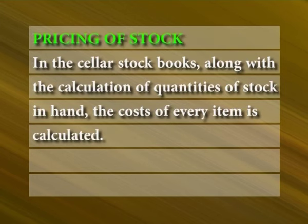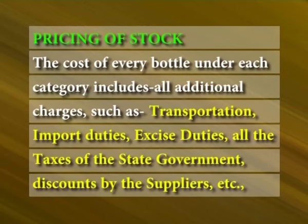Pricing of stock: In the cellar stock books, along with the calculation of quantities of stock in hand, the cost of every item is calculated. The total cost of the stock in hand is very useful information about the money held in cellar stock. The cost of every bottle under each category includes all additional charges such as transportation, import duties, excise duties, all state government taxes, and discounts by the suppliers.